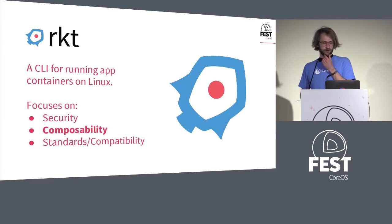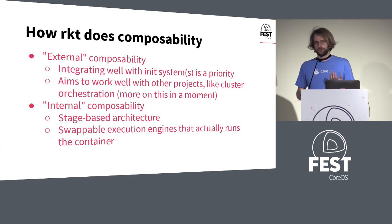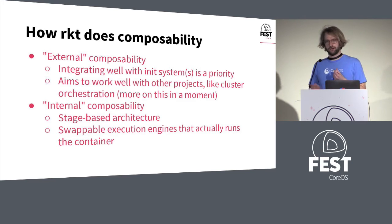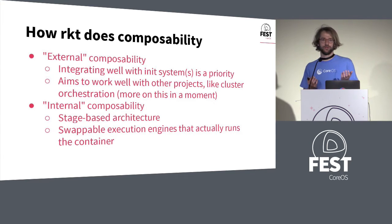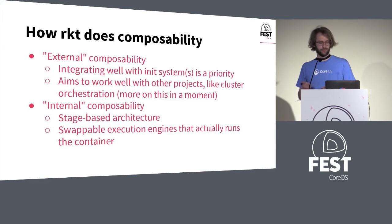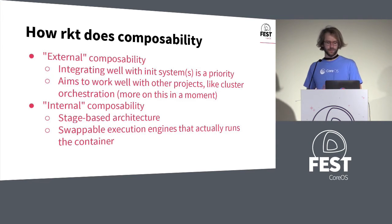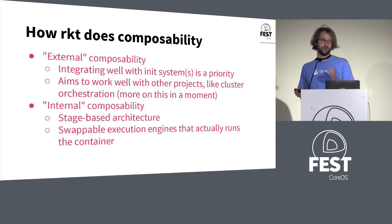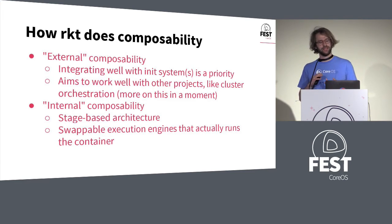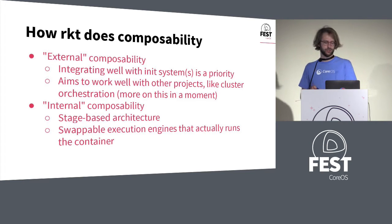The second pillar of Rocket development is composability. There are two aspects to this: what I call external composability — integrating Rocket with other systems like init systems and orchestration systems — and internal composability, meaning that even within Rocket, different modules should be swappable. Things like the network plugin system, and the key thing here, the execution engine, which is Rocket's staged architecture.